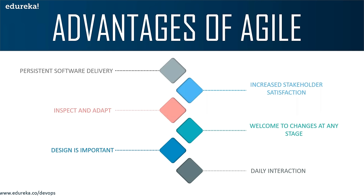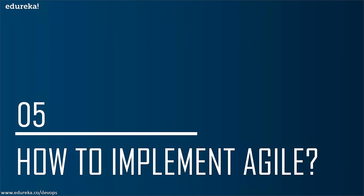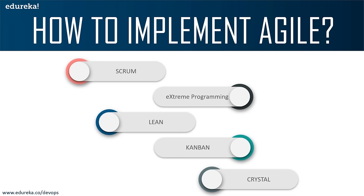The advantages of agile include persistent software delivery, increased stakeholder satisfaction, inspect and adapt, welcome to changes at any stage, design is important, and daily interactions. The question everybody has is: what's in it for me? How can agile help me as an individual, and how can I actually implement agile? There are multiple frameworks or philosophies for implementing agile.